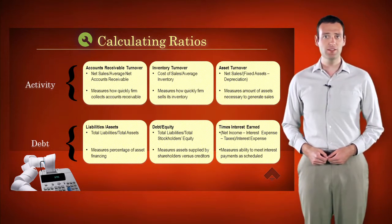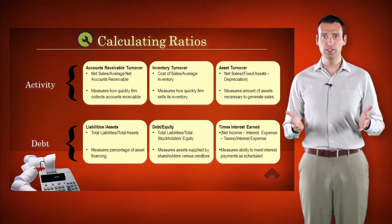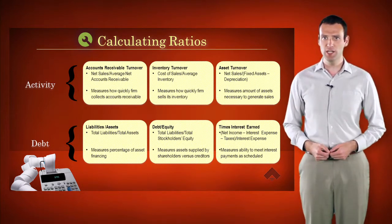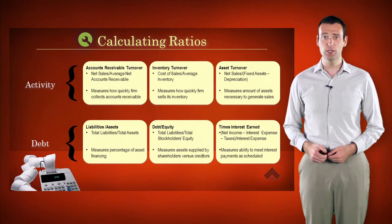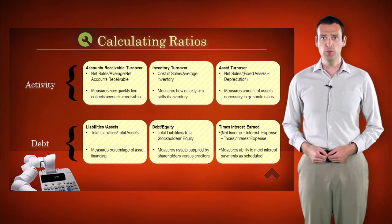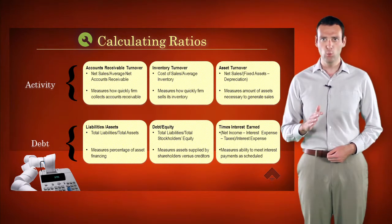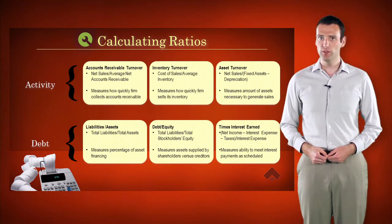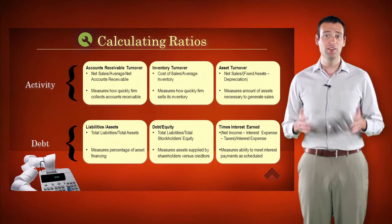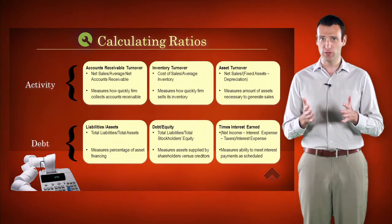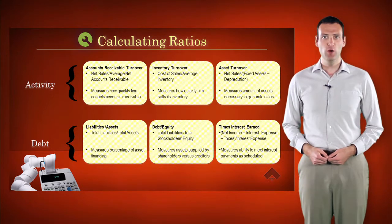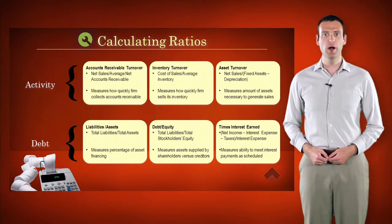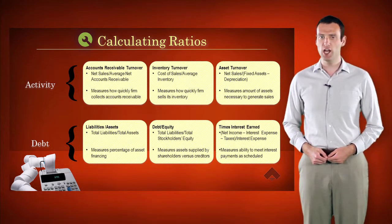Liabilities compared to assets, or total liabilities divided by total assets, tells us the percentage of assets that are financed. We hope this will be a number less than one; otherwise we're carrying debt that is greater than the value of assets, which means we are underwater. The debt-to-equity ratio is calculated by dividing total liabilities by total stockholders' equity.